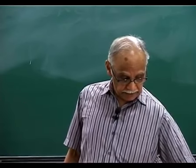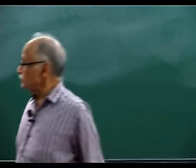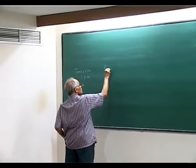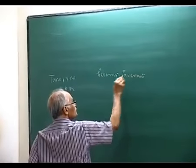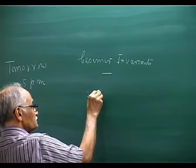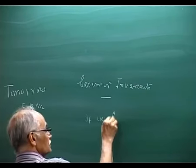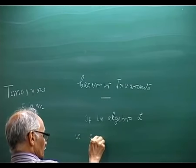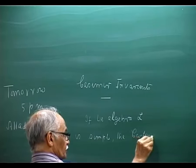What I did last time was Casimir invariants for Lie algebras. We found that if the Lie algebra L is simple, the Killing form is non-degenerate.